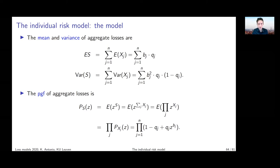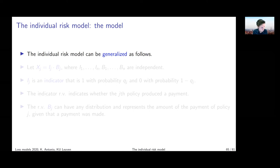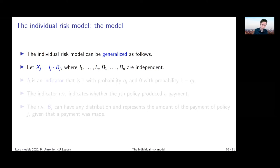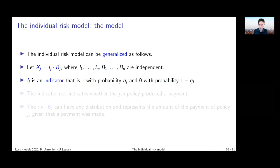Now we generalize by constructing xj as a product: xj = Ij times Bj, where Ij is an indicator variable and Bj is a random severity for contract j. We assume independence among indicator variables and severity variables, and also independence between indicators and severities. The indicator Ij equals one with probability qj and zero with probability one minus qj — expressing whether we encounter a loss.